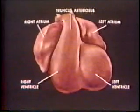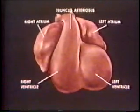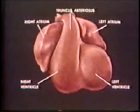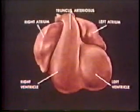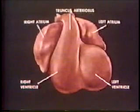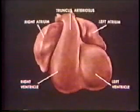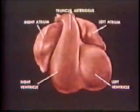A four-chambered heart is formed from this convoluted tube by the development of three septa, partitioning the atria, the ventricles and the truncus arteriosus. Although these septa develop simultaneously, they will be considered individually.